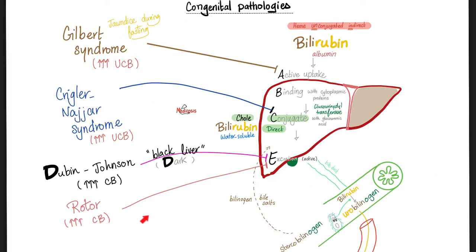There are four congenital anomalies that can affect bilirubin. In Gilbert syndrome, bilirubin cannot enter the liver, so unconjugated bilirubin is increased. In Crigler-Najjar, the enzyme UDP-glucuronidyl transferase is missing, so bilirubin cannot be conjugated — unconjugated bilirubin increases. Neither of these shows up in the urine because they are not water-soluble. However, in Dubin-Johnson or Rotor syndrome, the problem is in excretion, so conjugated bilirubin piles up — and this can show up in the urine because conjugated bilirubin is water-soluble.